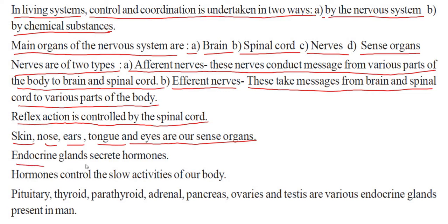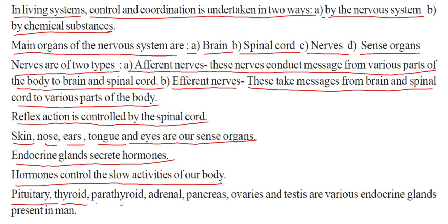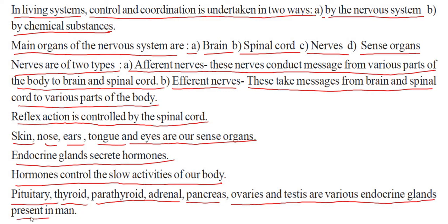Endocrine glands secrete hormones. Hormones control the slow activities of our body. Thyroid, parathyroid, adrenal, pancreas, ovaries, and testes are the various endocrine glands present in the human body.